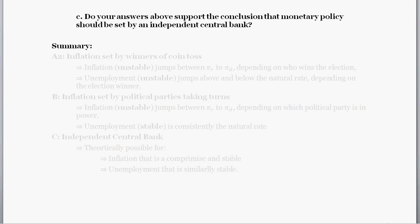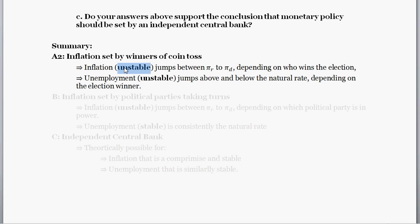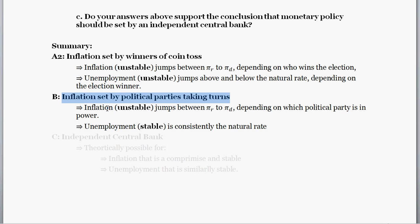Part C asks: do your answers above support the conclusion that monetary policy should be set by an independent central bank? Let's quickly review our conclusions. From Part A, when inflation is set by political parties determined by a coin toss, inflation was unstable — jumping between the Republican lower rate and the Democratic higher rate — and unemployment was also unstable, jumping above and below the natural rate. In Part B, where parties take turns, inflation was still unstable jumping between rates, but unemployment was stable at the natural rate because inflation expectations stayed aligned with actual outcomes.